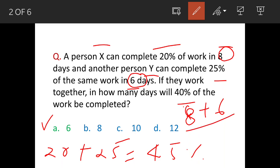...divided by 2, average is seven days. So 45% they are doing in seven days. That means 40% will be less than seven days, so obviously option A, six days, is the answer.